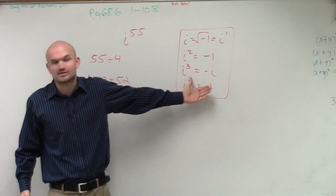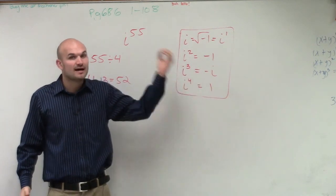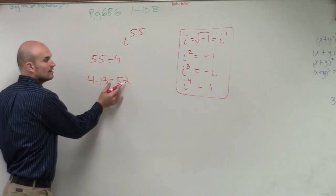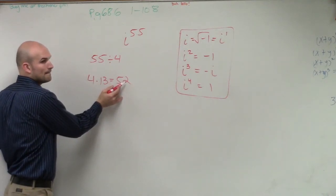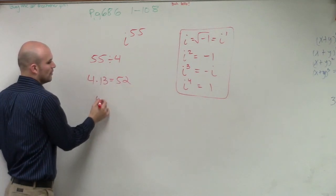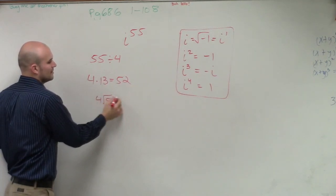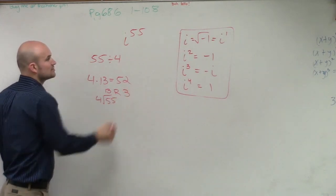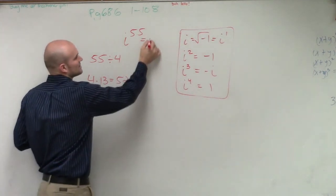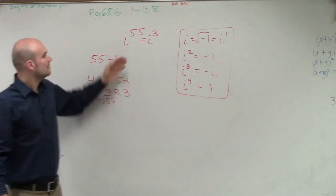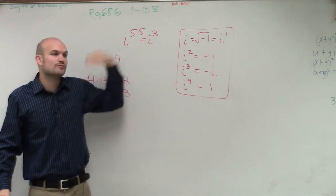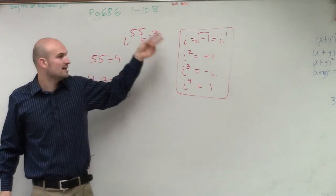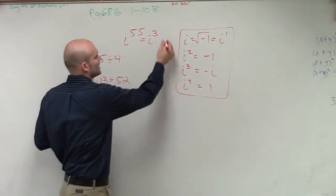But we're not interested in how many times it goes through the cycle. We're interested in what's the final value. So what's the remainder? If I get up to 52, then I'm going to have a remainder of what? What's my remainder? So 4 divides into 55, we know 13 times. Well, what's the remainder? 3, right? So therefore, that's going to be the exponent. So it's really, i to the 55th is pretty much being repeated 13 times, but then it leaves us with a remainder of 3. And i cubed, we know, is equal to negative i.